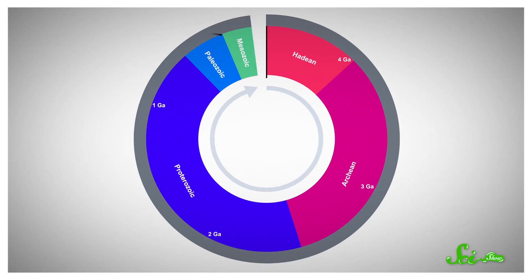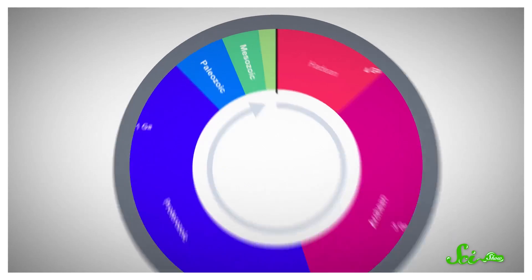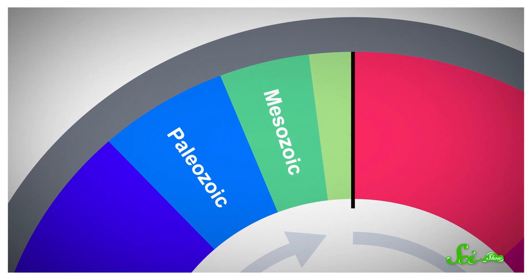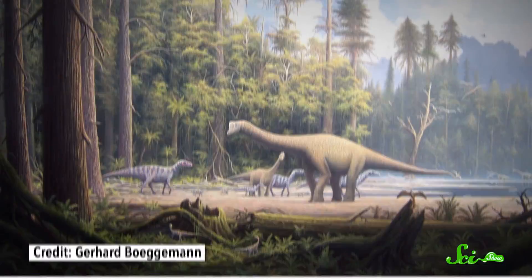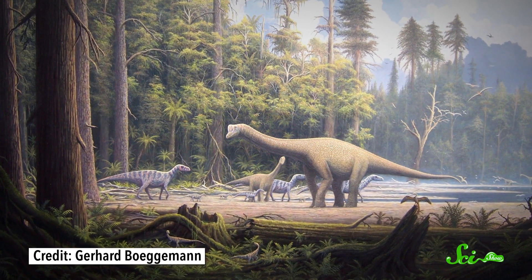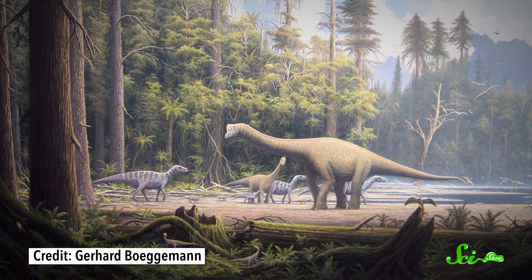Welcome to the third installment of our mini-series on the history of life on Earth. When we left off, life had been brought to its knees by a mass extinction at the end of the Paleozoic Era. The Mesozoic Era, from 251 to 65 million years ago, followed the Great Extinction and would produce some of the weirdest and most fascinating animals of all time, including the dinosaurs. It also led to most of the major land animal groups we know today.